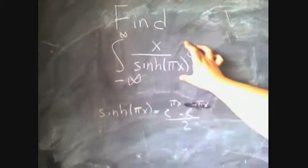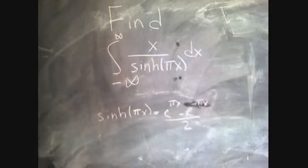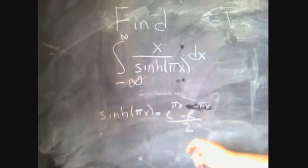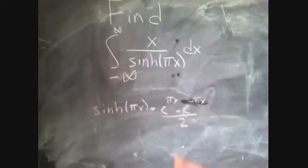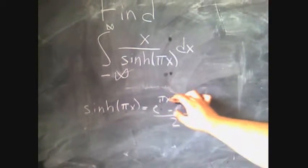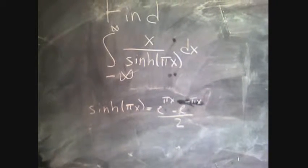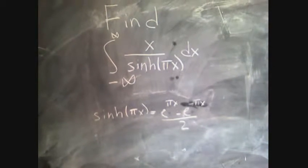So today we're asked to evaluate this weird integral here. We have x over the sinh of πx dx from negative infinity to infinity. The sinh function can be written as e to the πx minus e to the minus πx over 2. So in order to solve this we're going to have to go back to our friend, contour integration.